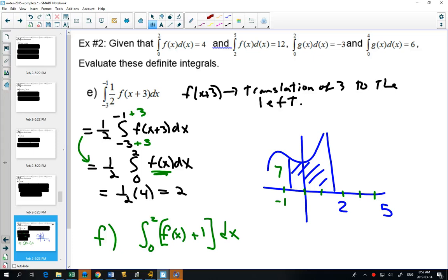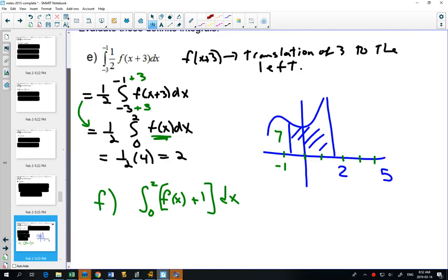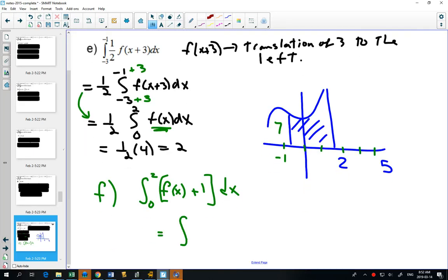What happens if the transformation was moved up 1? From 0 to 2. F of x plus 1. Sometimes students just go, oh, the answer is 4, so I'm just going to add 1 and get 5, and that's a little bit disastrous. It doesn't quite work that way. But we can use the property like this. 0 to 2 of f of x dx plus 0 to 2 of 1 dx.